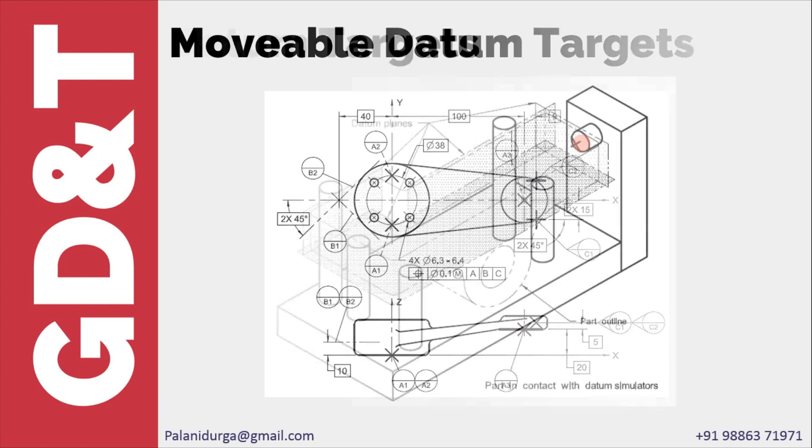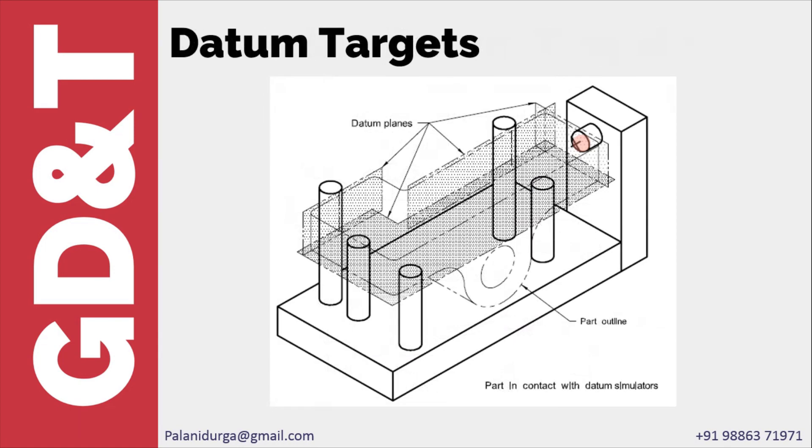It does not mean that you should always have datum targets as primary, secondary, tertiary. You can have any combination. If you have a planar surface as a primary, then you can use datum target lines as a secondary or point as a secondary. Any combination is allowed.